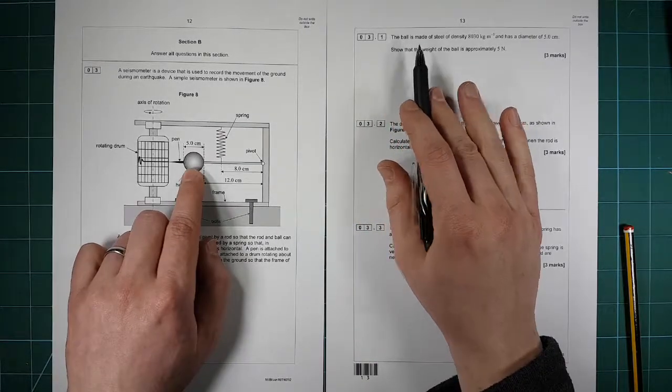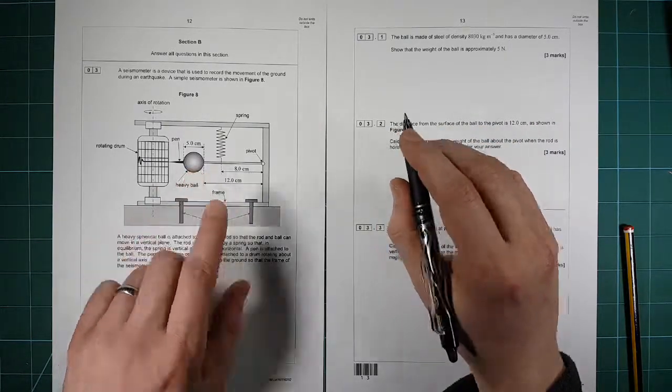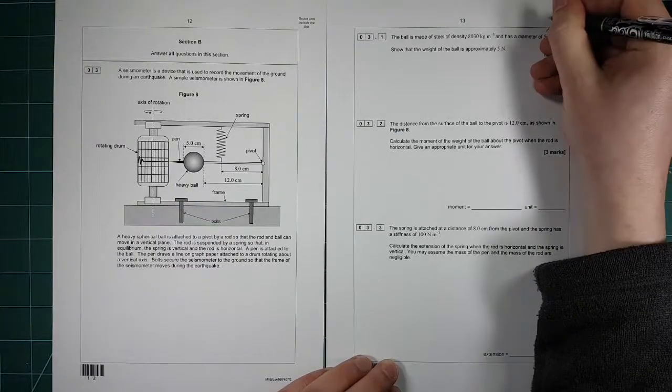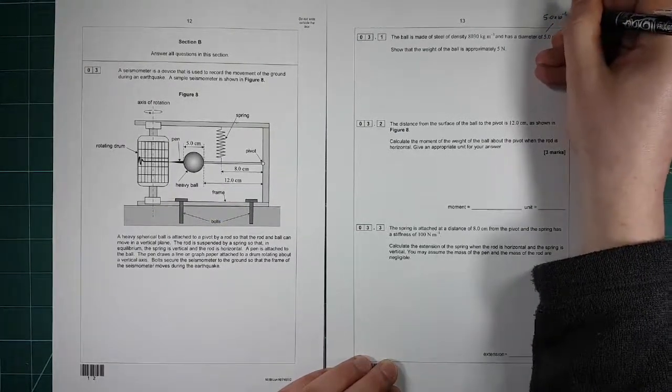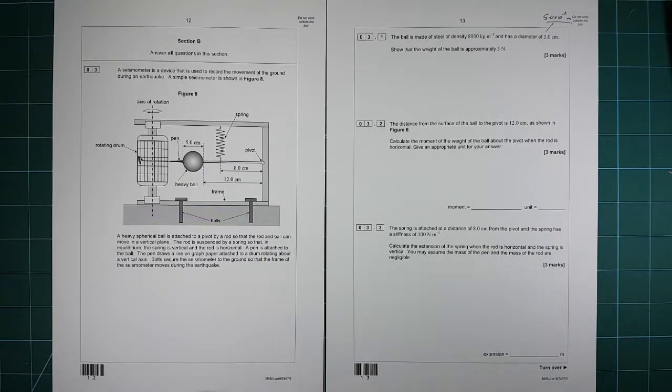So the ball here is made of a density of that material, has diameter 5 cm. So first thing to do, as soon as you see 5 cm, that's 5.0 times 10 to the minus 2 meters. Make sure that you use base units.